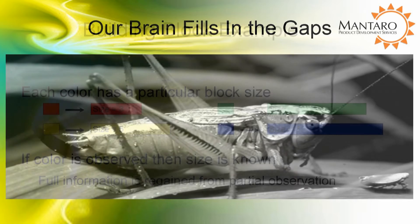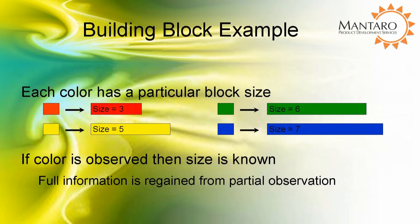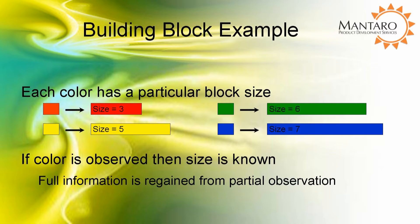Let's see a simplified example of how sparse representations work. We will start with a set of building blocks, each having a unique color and length. This allows us to know the length of the building blocks simply by observing the color.